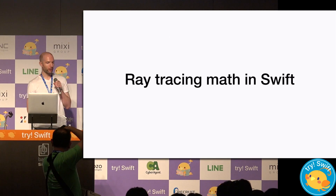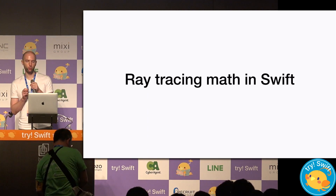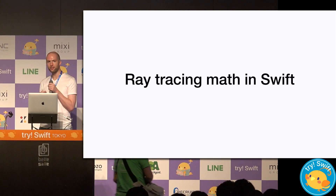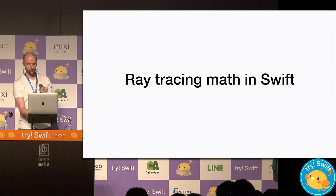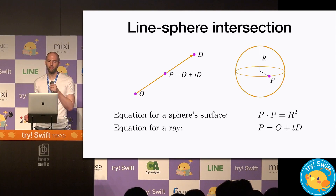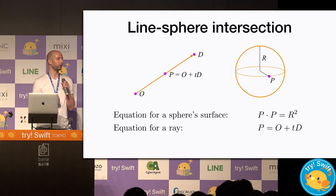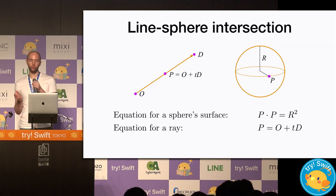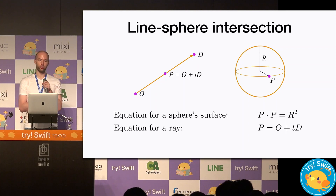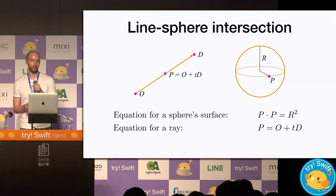In the short time that we have, I want to give you a taste of some fundamental ray tracing math and how it would be done in Swift. For instance, if we want to render one of the spheres in the movie, we need to know when our rays of light will intersect it. We're shooting out thousands of rays of light into our scene, and we need to know which ones will hit the sphere.